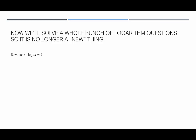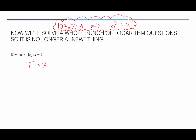Our first example: log base 7 of x equals 2. We want to find the value of x. One strategy is to convert the logarithmic equation back into exponential form — log base b of x equals y is equivalent to b to the y equals x. So the base raised to the exponent equals x: 7 squared equals x. Well, 7 squared is 49, so x equals 49. Plugging back in: 7 to the second is 49 — true.